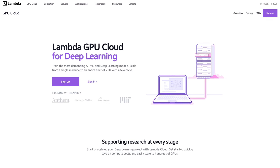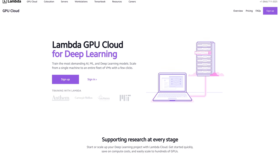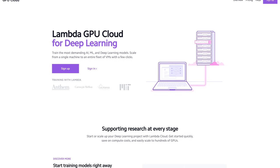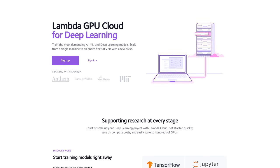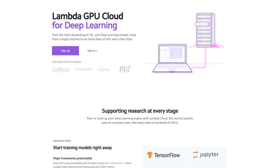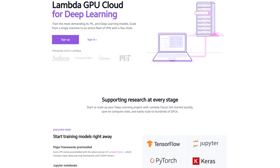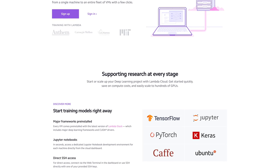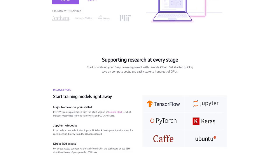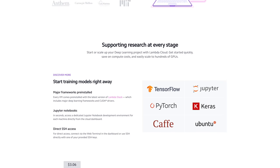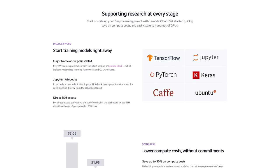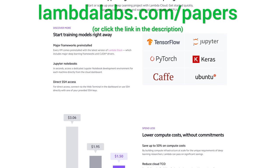So, this episode has been supported by Lambda GPU Cloud. If you are looking for inexpensive cloud GPUs for AI, check out Lambda GPU Cloud. Get this, they have recently launched an Nvidia RTX A6000 with 48 gigabytes of memory. And hold on to your papers, because Lambda GPU Cloud can cost less than half of AWS and Azure.